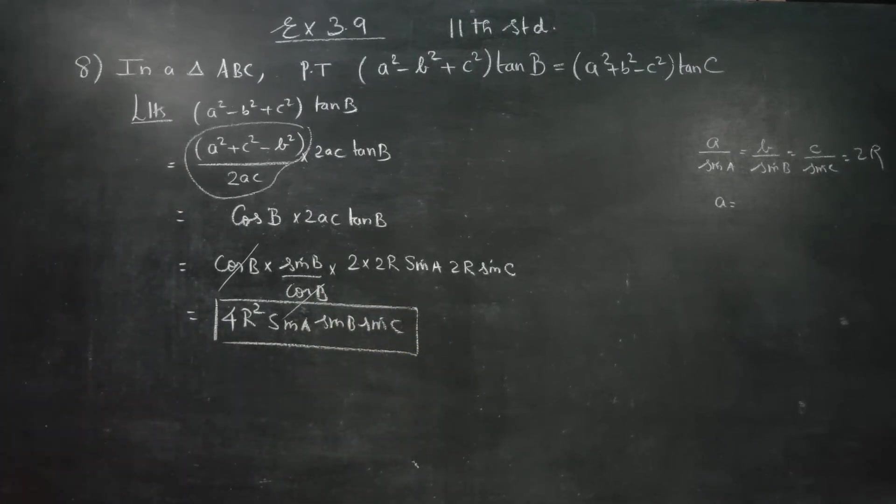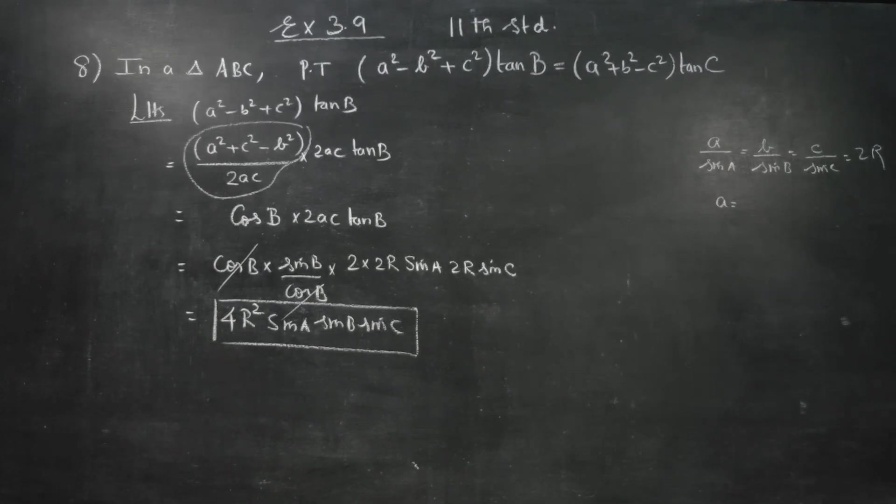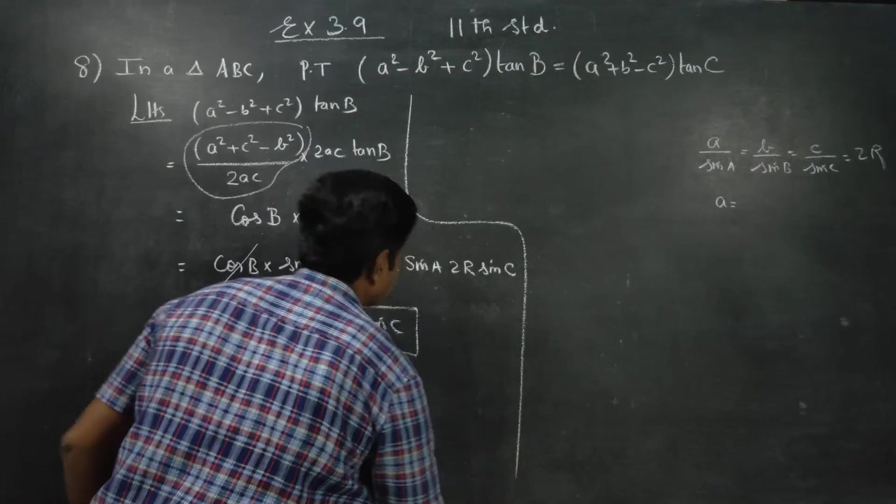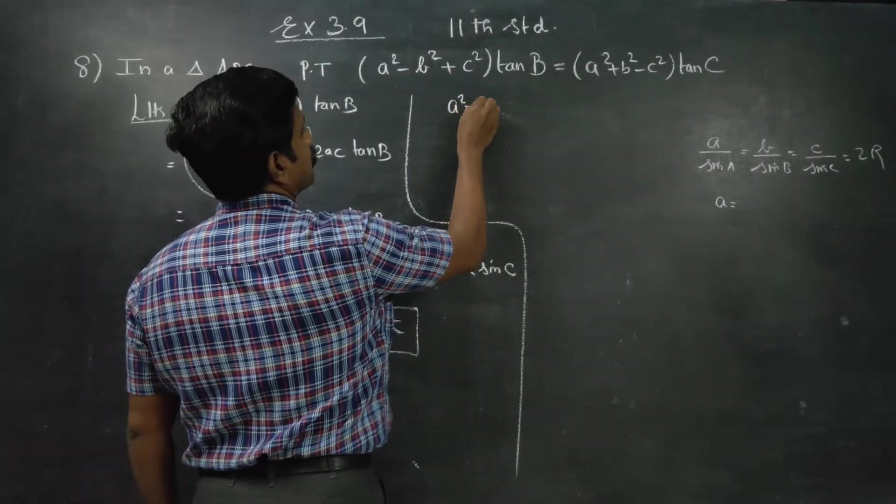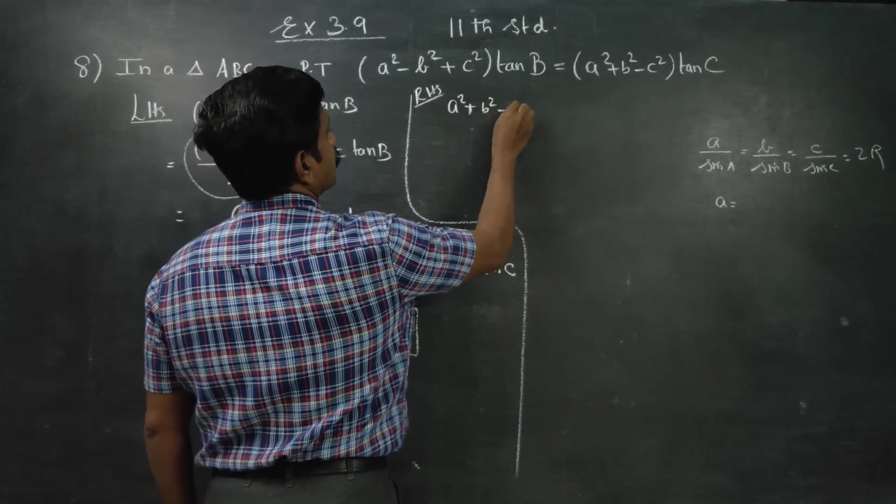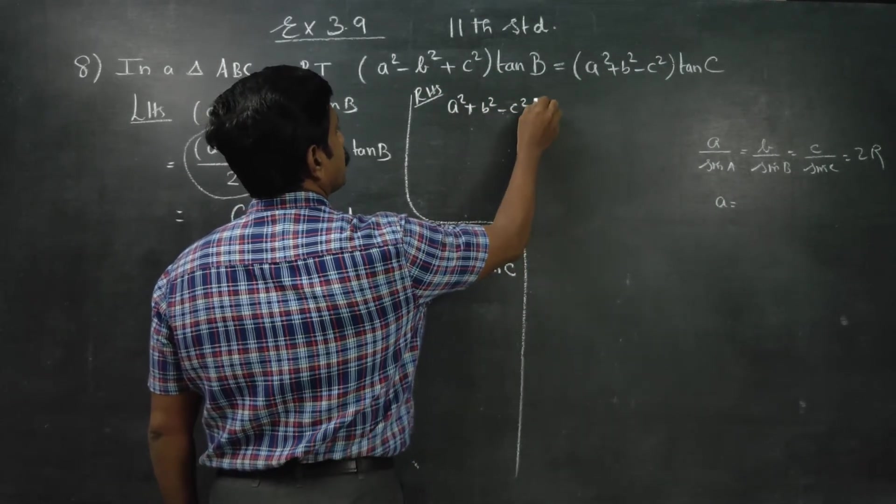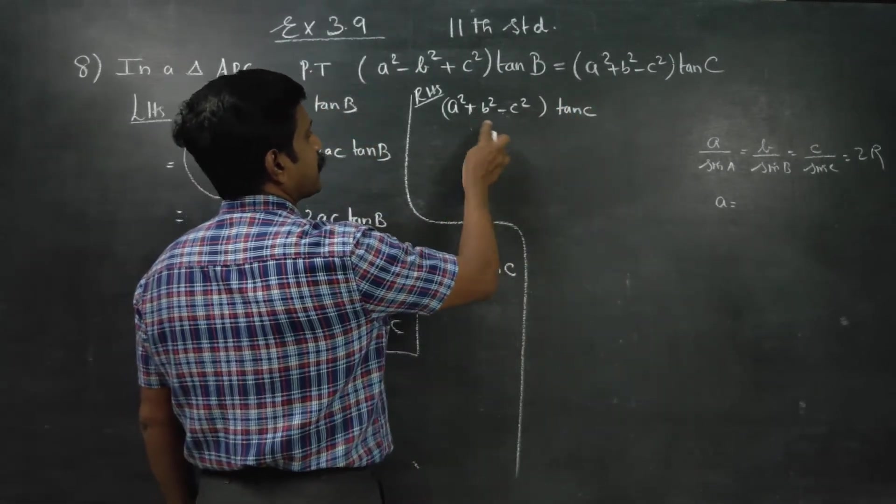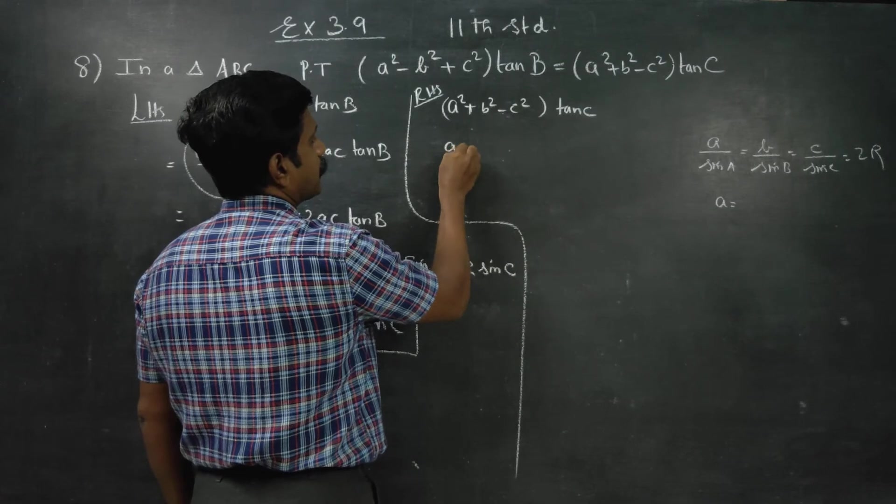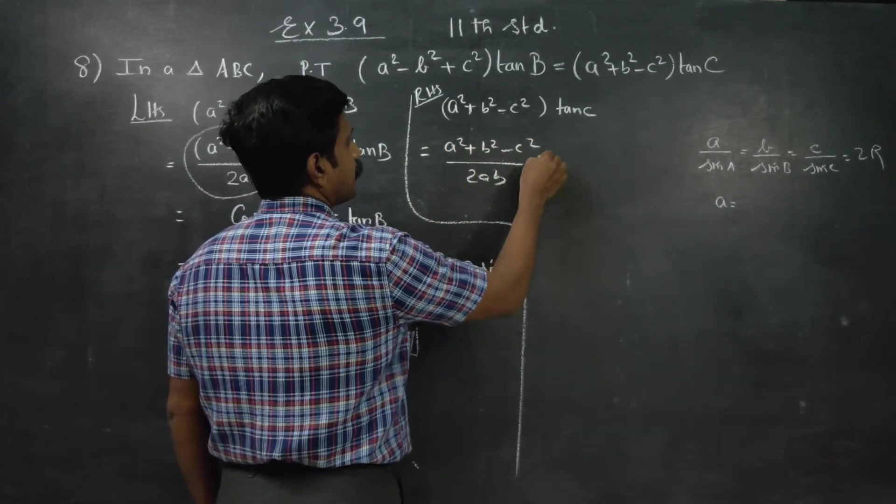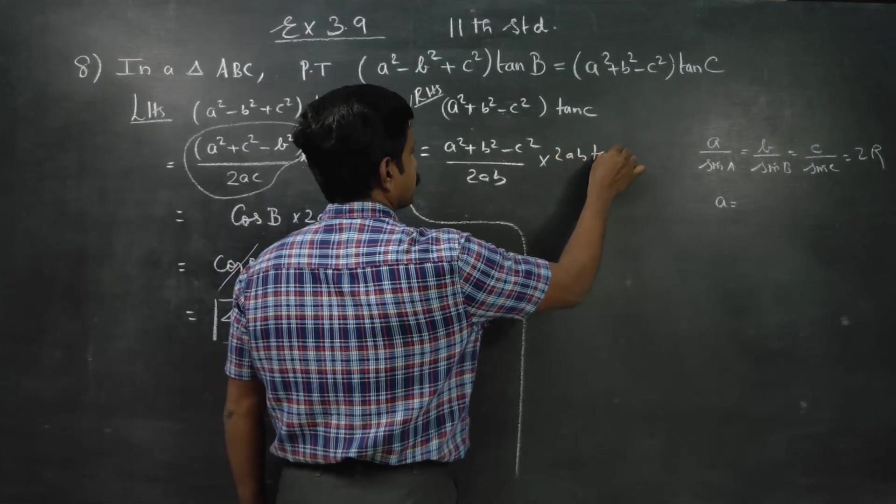This is the simplified result, that is LHS. Then coming back to RHS, again same technique. RHS is A² plus B² minus C² into tan C. I am going to multiply and divide by 2AB: A² plus B² minus C² by 2AB into 2AB tan C, right?